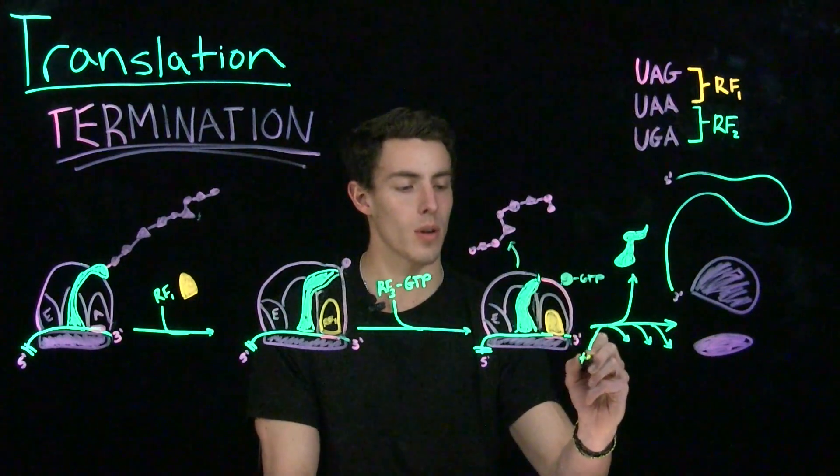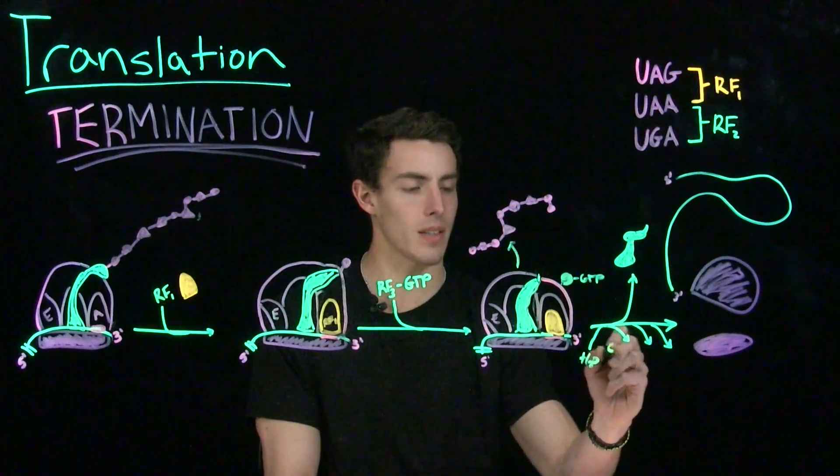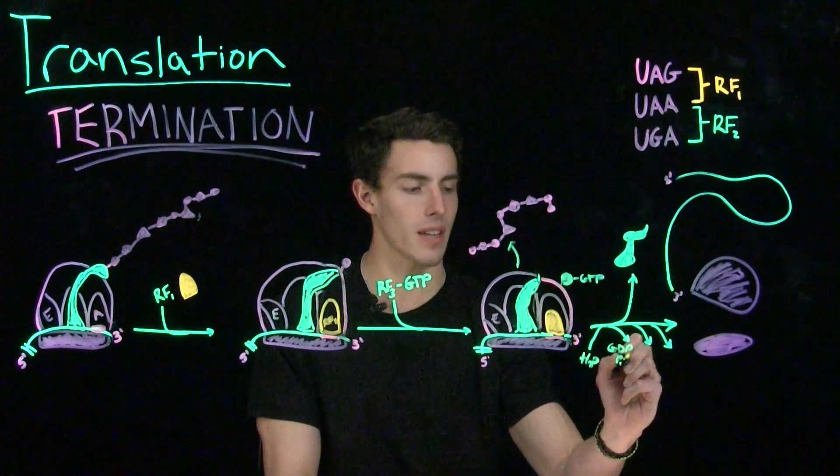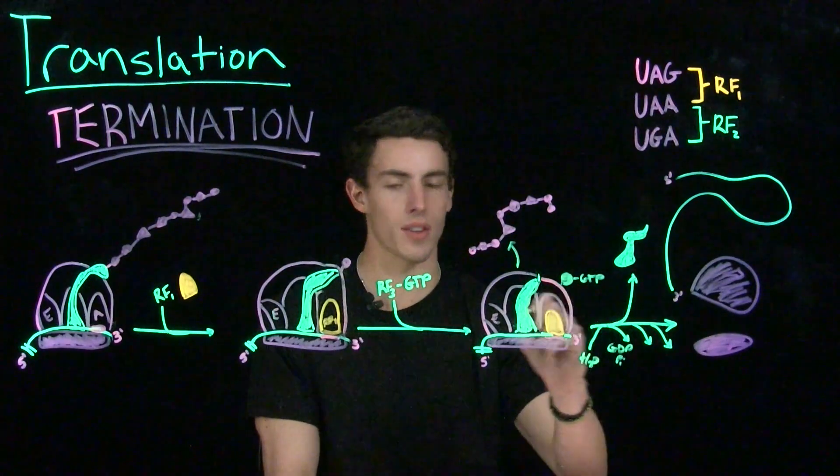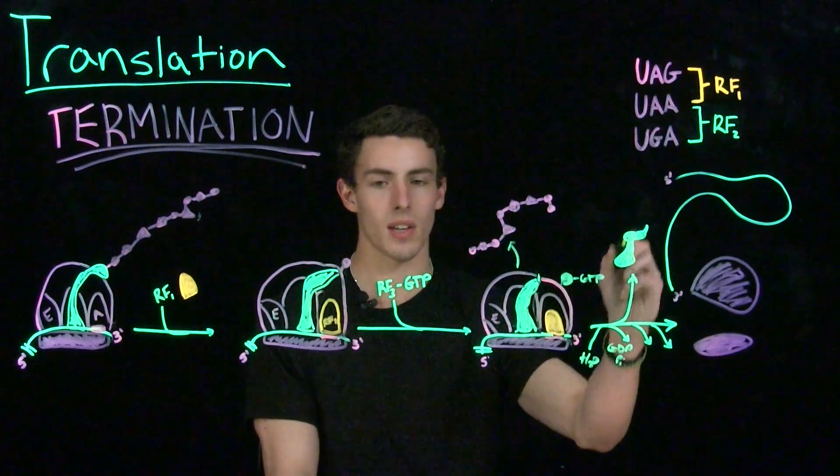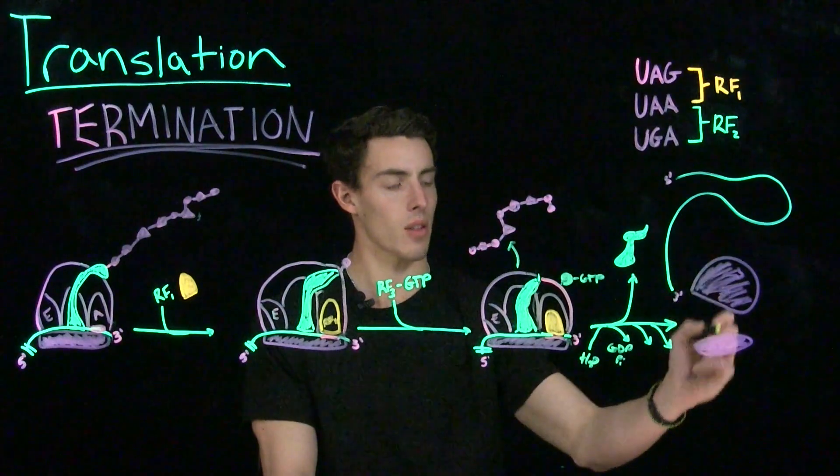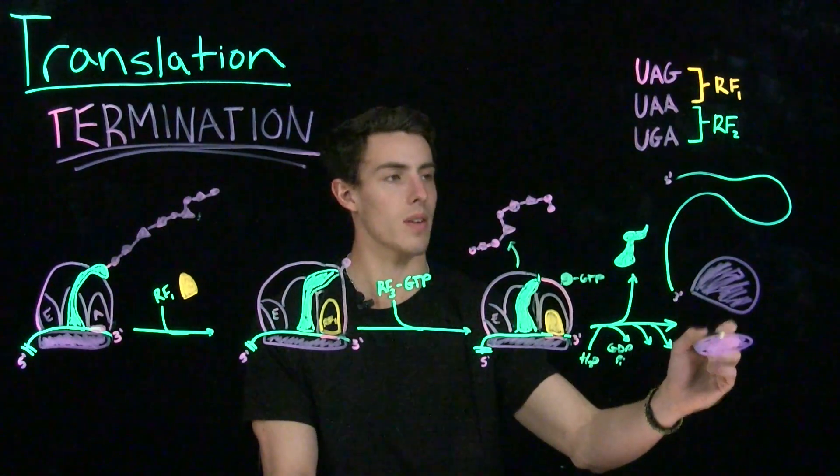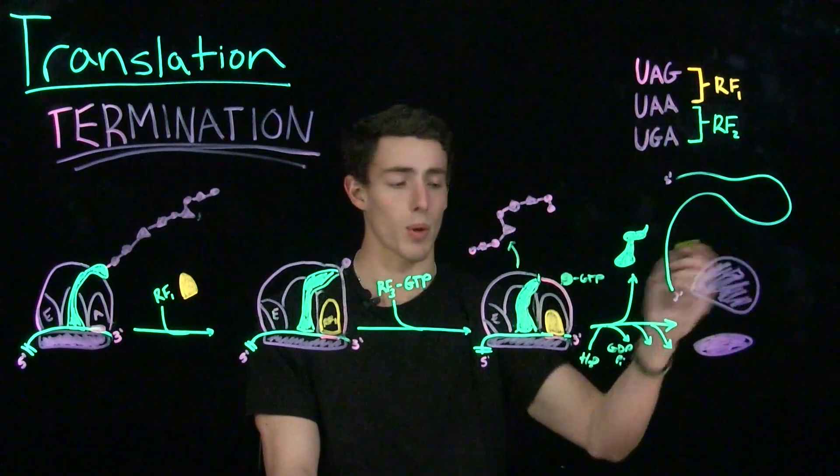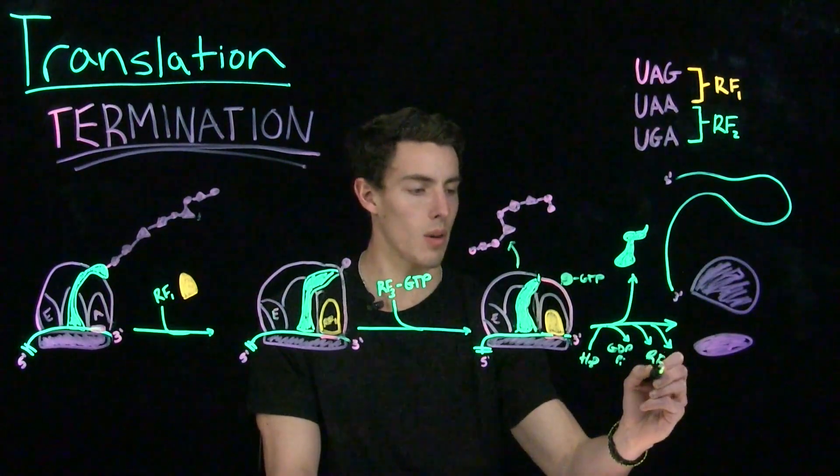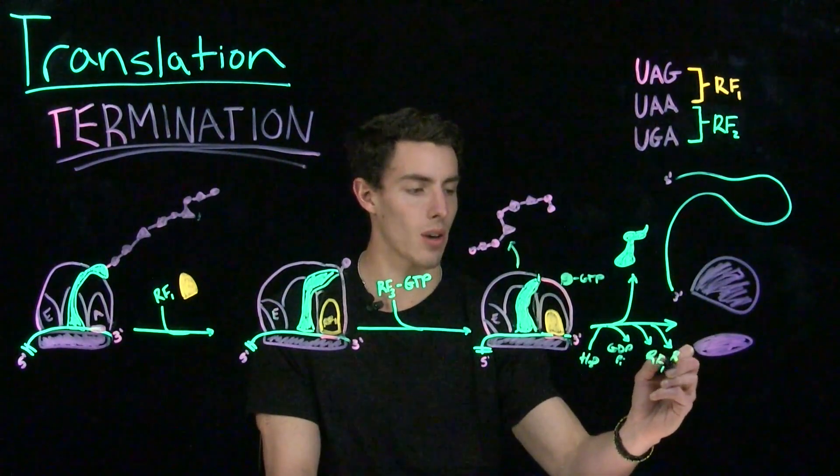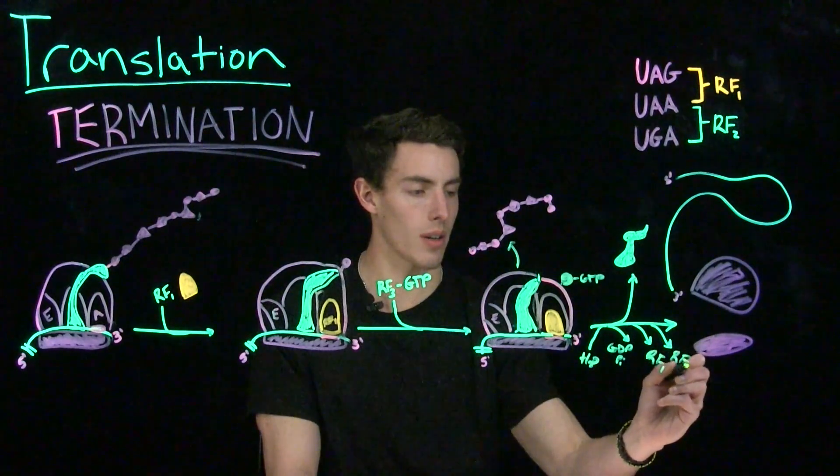After our polypeptide is free, we're going to hydrolyze this GTP to GDP and an inorganic phosphate, and everything is going to dissociate, meaning our tRNA is going to leave, our 50S and 30S subunits are going to come apart, our mRNA is going to be freed and it's probably going to be broken down at this point, and RF1 or 2 and RF3 are going to leave.